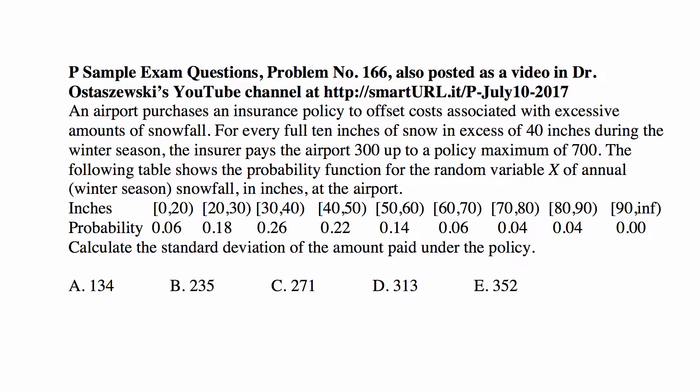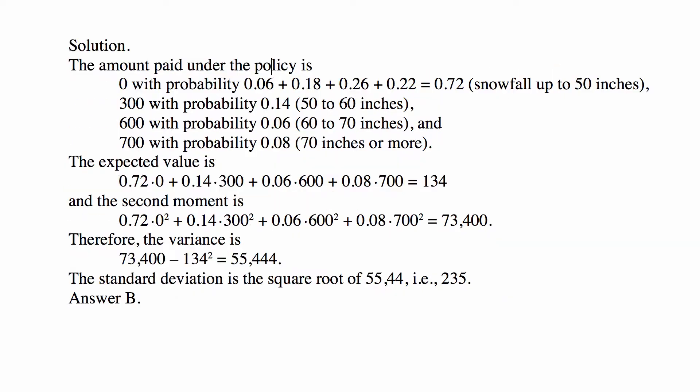Calculate the standard deviation of the amount paid under the policy. The amount paid under the policy — the random variable we're studying — is 0 with probability 0.72, 300 with probability 0.14, 600 with probability 0.06, and 700 with probability 0.08, which is really 0.04 plus 0.04, for snowfall of 70 inches or more.